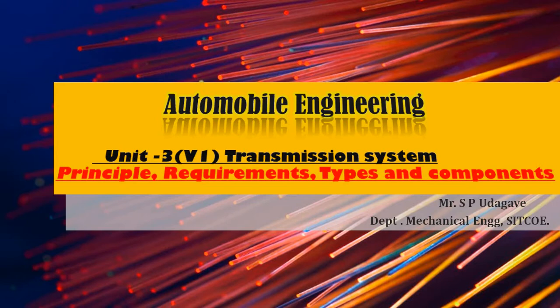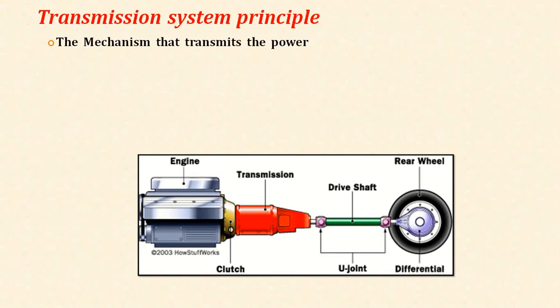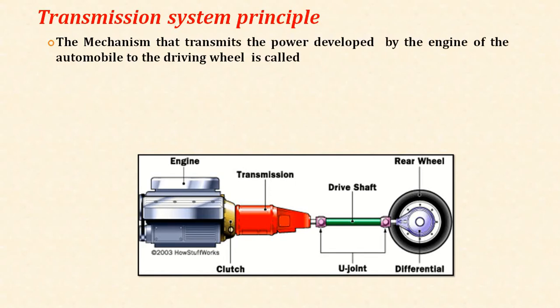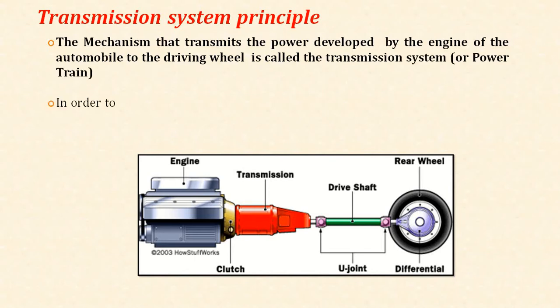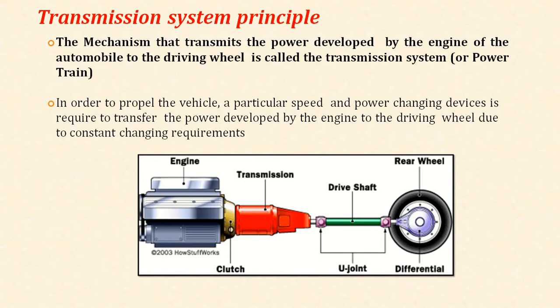The basic principle of the transmission system: it is a mechanism that transmits the power developed by the engine of an automobile to the driving wheels, and is called the transmission system or the power train. In order to propel the vehicle, power-changing devices are required to transfer the power developed by the engine to the driving wheels due to constantly changing requirements. These devices are known as the transmission.